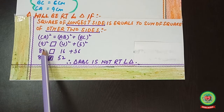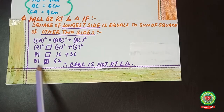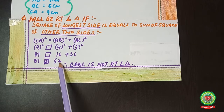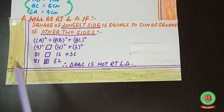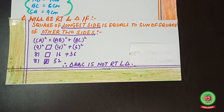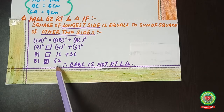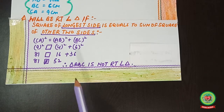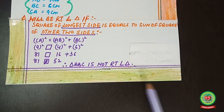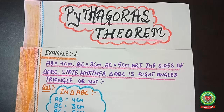81 on the left, and 16 + 36 = 52 on the right. The left hand side is 81 and the right hand side is 52, which are not equal. Therefore, triangle ABC is not a right angle triangle.